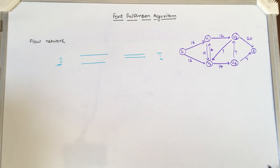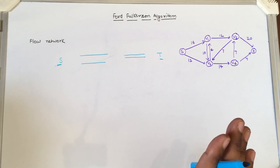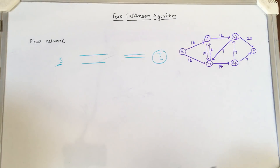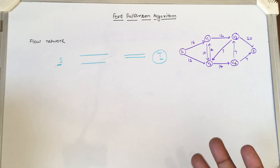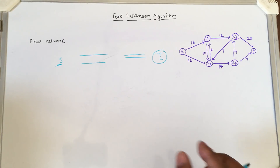We want to find out the maximum flow possible from a source city to a destination city — what combinations of routes through cities would maximize the flow at the destination. So we have to compute the greatest rate at which material can be shipped from source to sink without violating any capacity constraint.